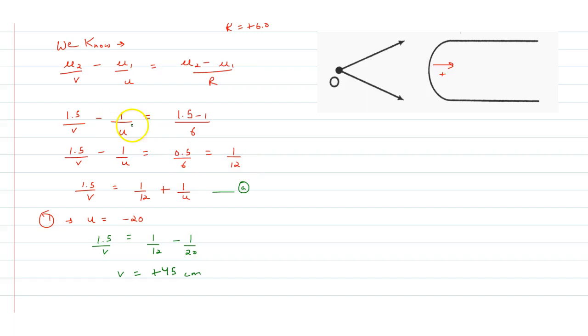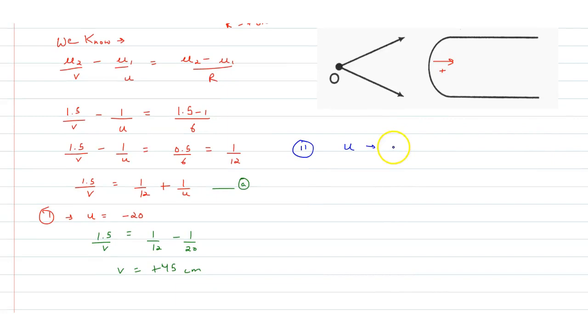Now, we will write the second part. That is part 2. u value minus 10. Then we will use the same equation. Equation value put: 1.5 by v is equal to 1 by 12 plus 1 by minus 10.